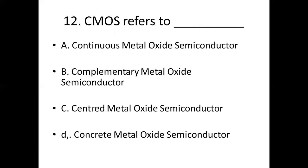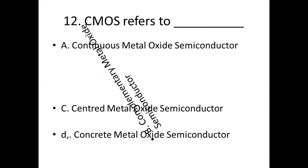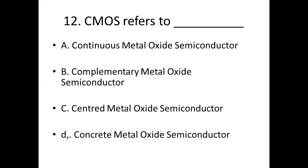12th bit: CMOS refers to dash. Option A: continuous metal oxide semiconductor. Option B: complementary metal oxide semiconductor. Option C: central metal oxide semiconductor. Option D: concentrate metal oxide semiconductor. Answer: Option B, complementary metal oxide semiconductor.